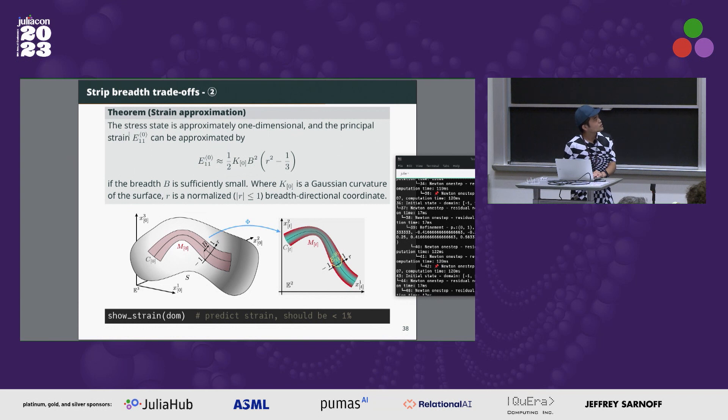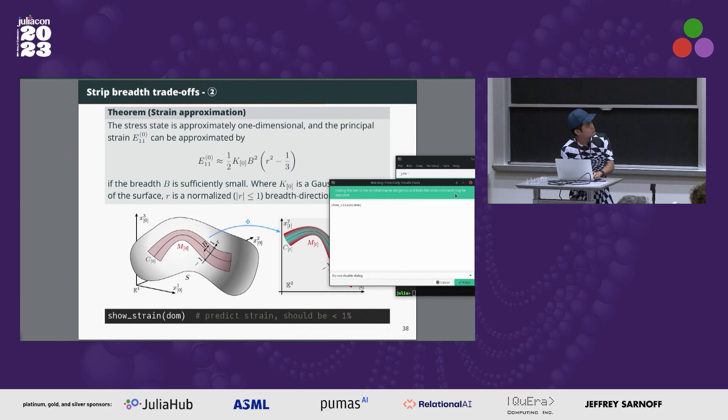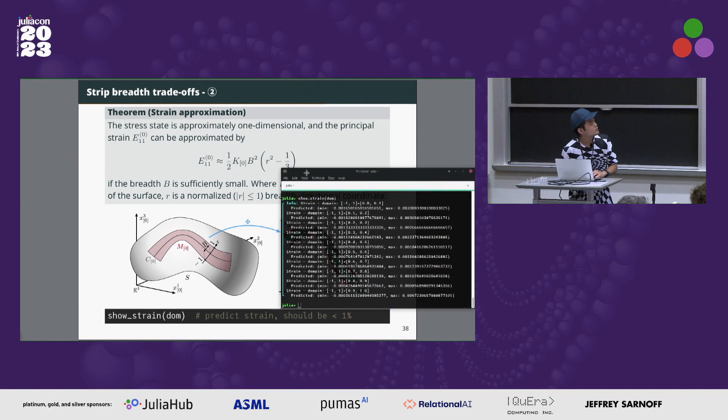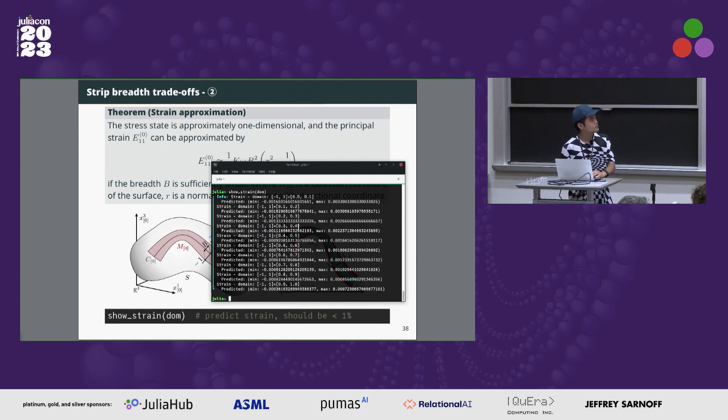Again, our theorem is useful here. This term approximates the strain in the medium. By using this formula we can find the optimal breadth of the strips. In the package, the show strain function can be used to calculate the strain based on the formula. It shows the predicted strain like this, and the strain is around one percent, so it should be okay.